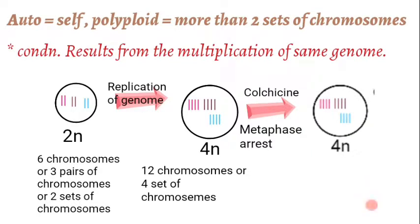Now the cell undergoes mitosis, and during mitosis if you treat the cells with colchicine, colchicine leads to metaphase arrest in the cell cycle. The cell won't be able to exit through metaphase, so the cell will remain in the tetraploid state. This is how the autopolyploidy condition results.